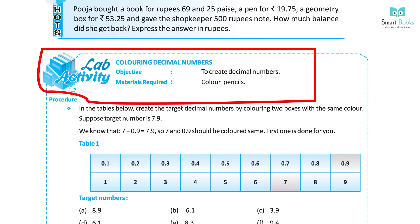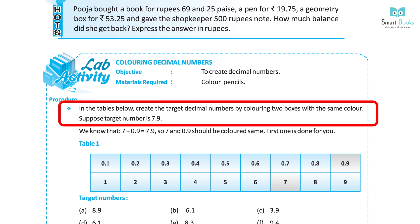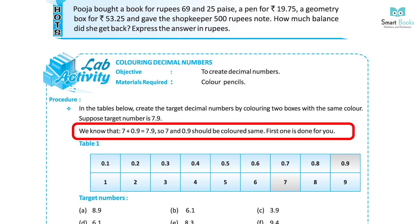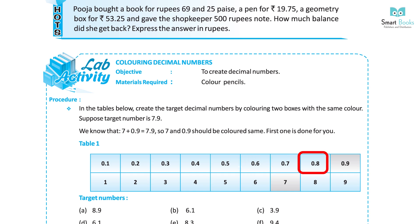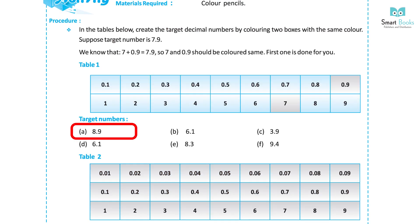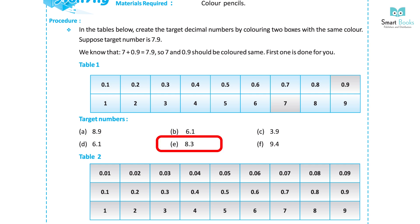Lab Activity — Coloring Decimal Numbers: Objective: To create decimal numbers. Materials required: Color pencils. Procedure: In the tables given below, create the target decimal numbers by coloring two boxes with the same color. For example, if the target number is 7.9, since 7 plus 0.9 equals 7.9, color 7 and 0.9 with the same color. Table 1 target numbers: A. 8.9, B. 6.1, C. 3.9, D. 6.1, E. 8.3, F. 9.4.